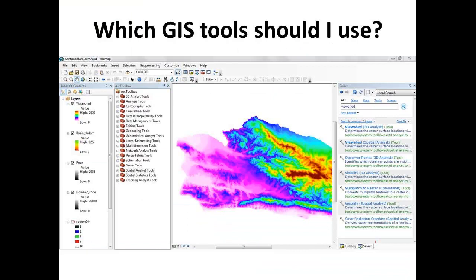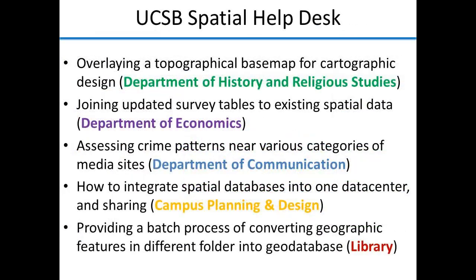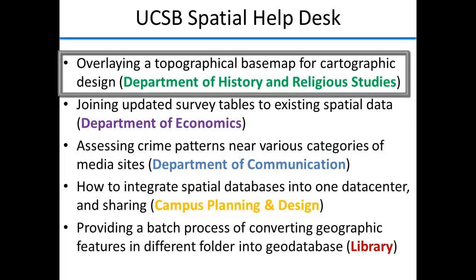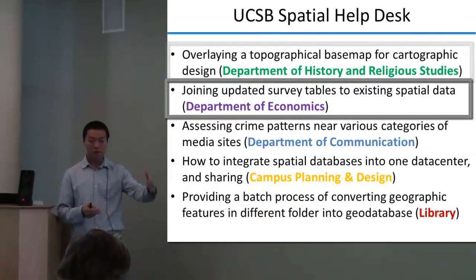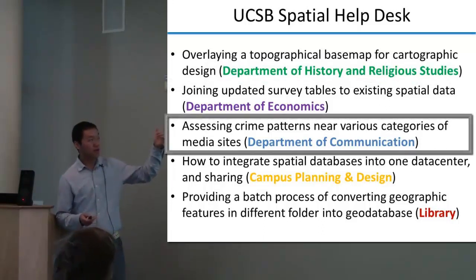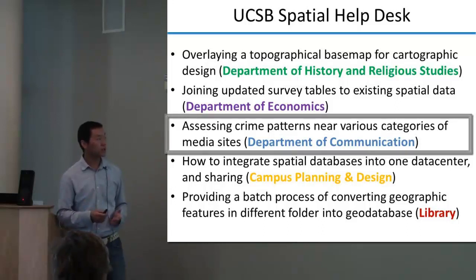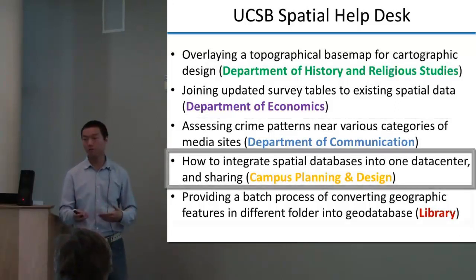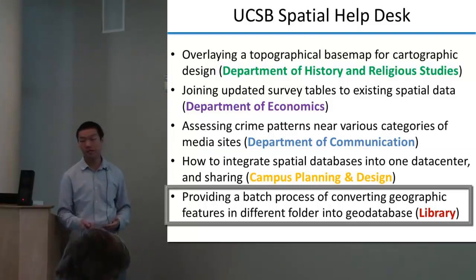We'll just leave some examples here. They will ask me which GIS tools should I use for a specific task? But more than that, we also have several questions. For example, we found a great symbol and direct page such as overlapping topographic basemap for category design for a specific project, or what's concerned such as joining some table to their spatial geometry, and also more advanced spatial analysis such as some patterns nearby various kinds of mobile media sites, or how to interpret some database, or do some automatic processing for the geospatial data.